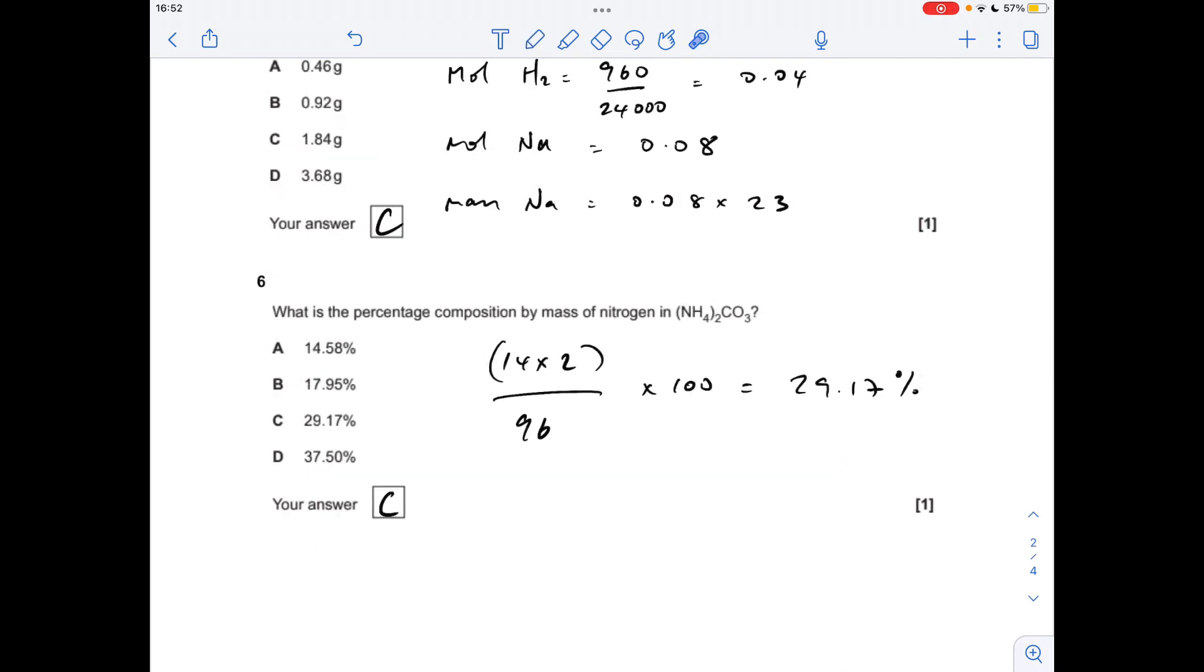Number six. The percentage composition by mass of nitrogen in ammonium carbonate. Just be careful, there's two nitrogens in ammonium carbonate because of the bracket there and the two outside. So 28 grams of the 96 is nitrogen, so as a percentage multiply that by 100, 29.17%, option C.